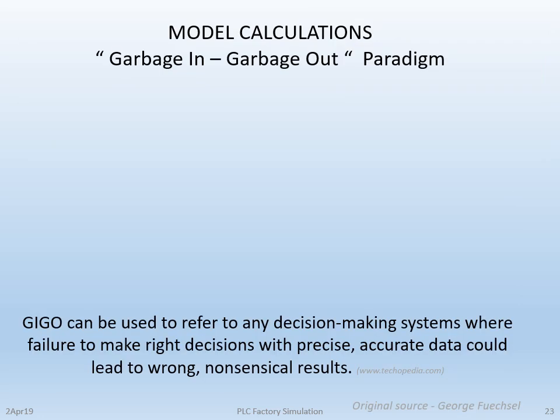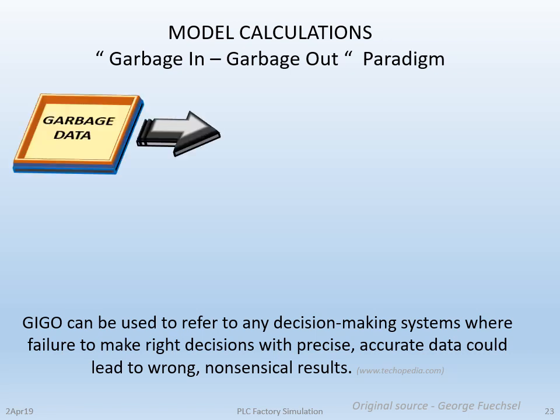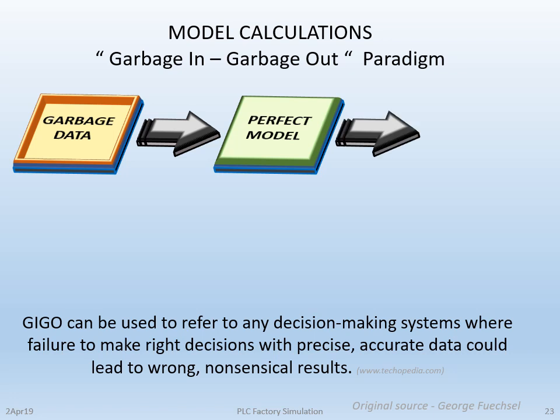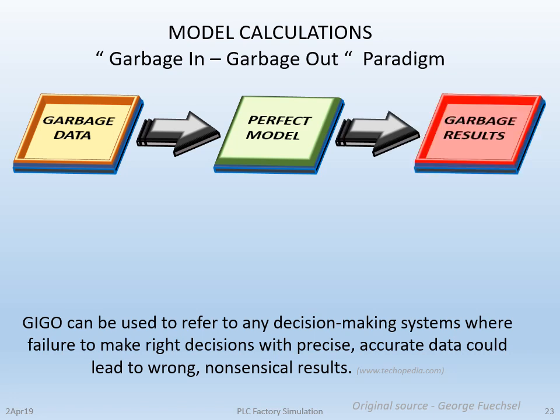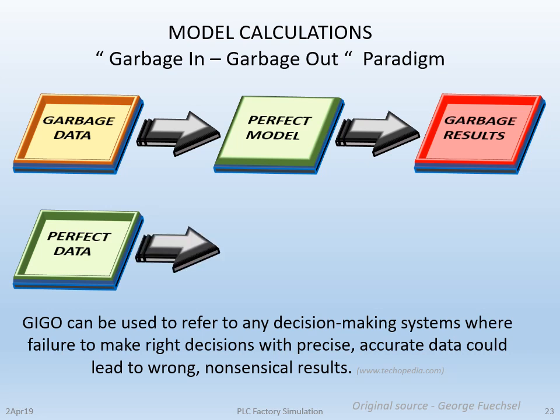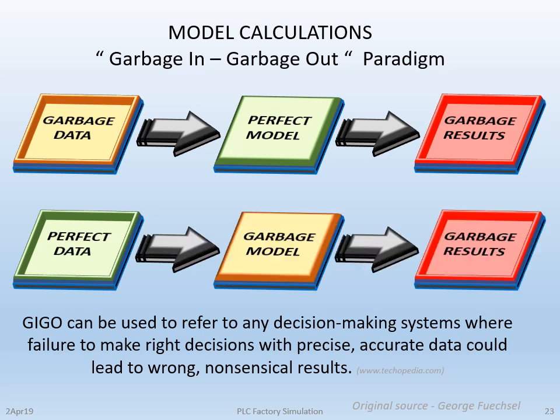Consider the saying: garbage in, garbage out. If you're not spending a large amount of your program time in planning, designing, and flow charting your code, you're destined to be one of those who this will refer to. In this familiar paradigm, garbage data inputted to a perfect model still gets garbage results. If we have perfect data but a garbage model, we still get garbage results. Garbage in, garbage out can be used to refer to any decision-making system where failure to make the right decisions with precise and accurate data can lead to wrong or nonsensical results.